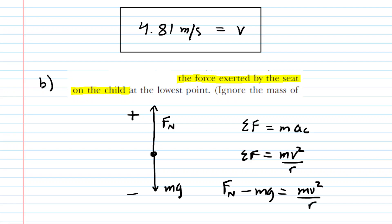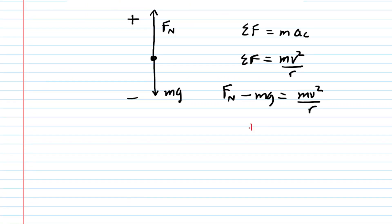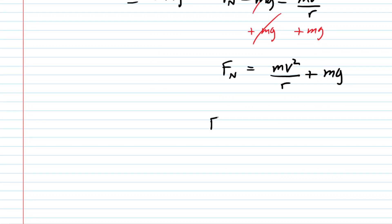And then finally, to solve this for the normal force, we can just add Mg to both sides of this equation. And then at that point, all you have to do is plug in the known data. If you want to make your life a little easier, you could actually factor the mass of the child out, and that would leave you with the term V-squared over R plus G. That wasn't necessary, but that could simplify the calculation. Let's go ahead and plug everything in.